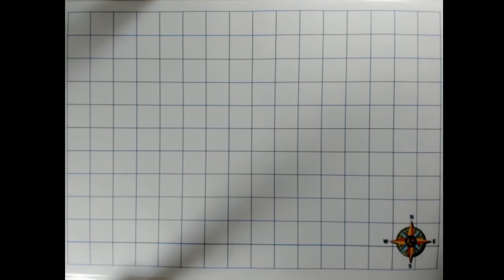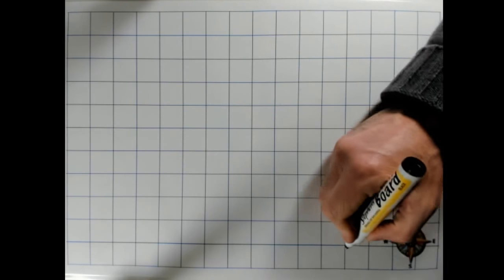I need to count out and make sure I've got my squares right. So it's a square room, 8 by 8, and we'll start off roughly, we'll just dot it out here.